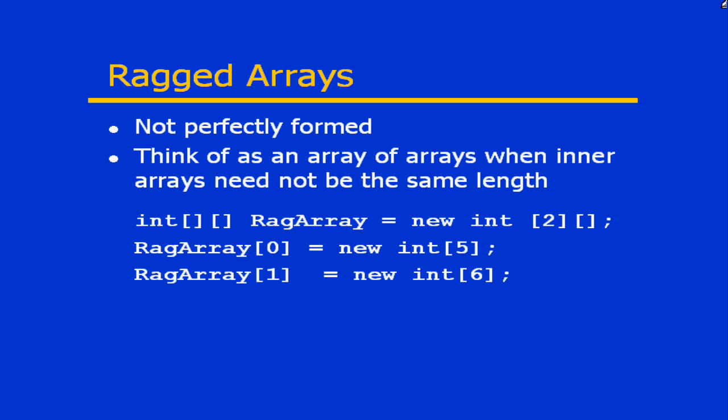So ragarray[0] represents the first element of the ragged array, and it stores an array with five elements. The second element is also an array, with six elements. You can see that we have a specific number of arrays being stored, but each one could be of a different size. You could also have multiple dimensions in a ragged array — the last dimension will be the ragged dimension.